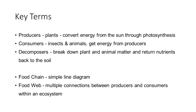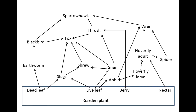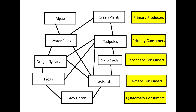A food chain is a simple line diagram, whereas a food web shows the multiple connections between producers and consumers within an ecosystem. In this example of a food web, we see the primary producers at the top. Then as we go down the page, we see primary, secondary, tertiary, and quaternary consumers, and you see all the links and interactions between all the different species in this ecosystem.